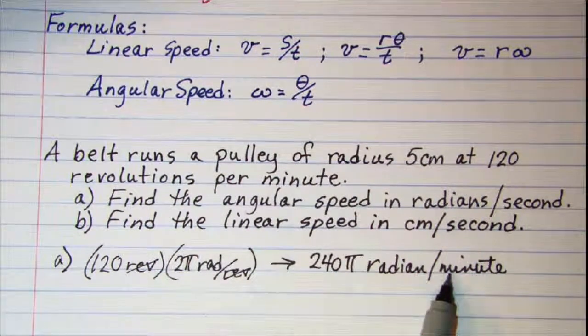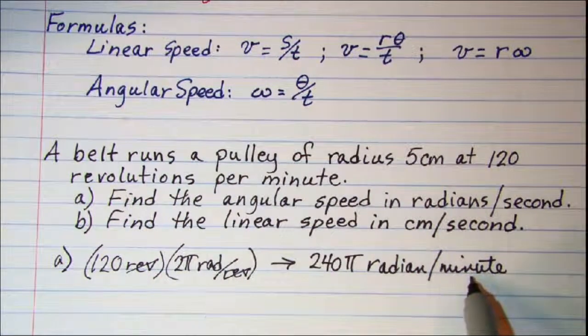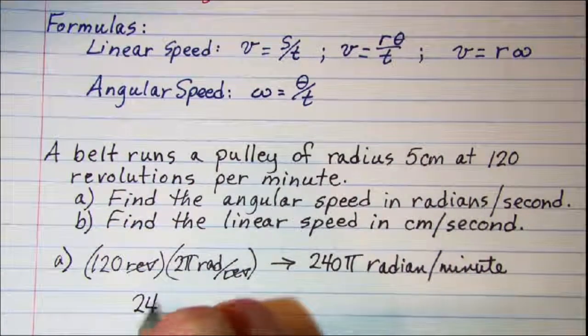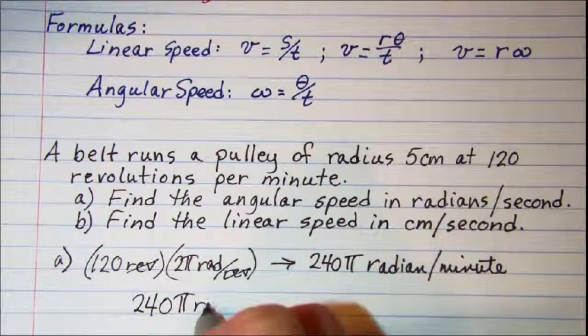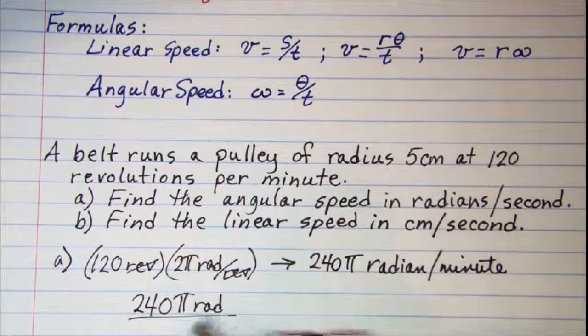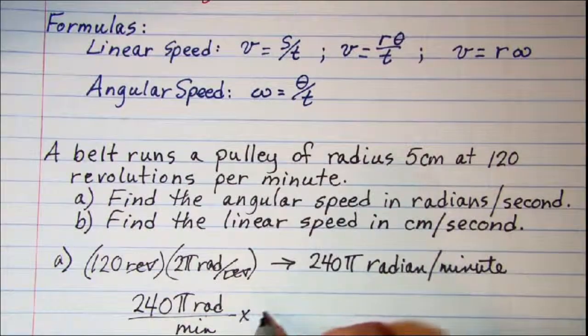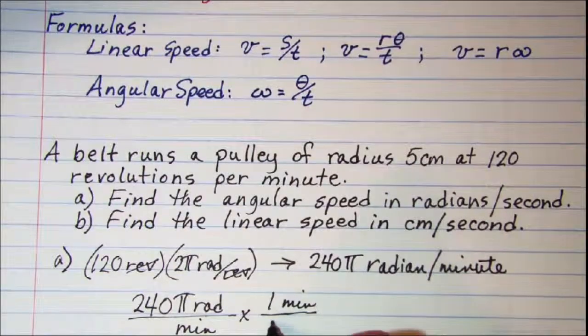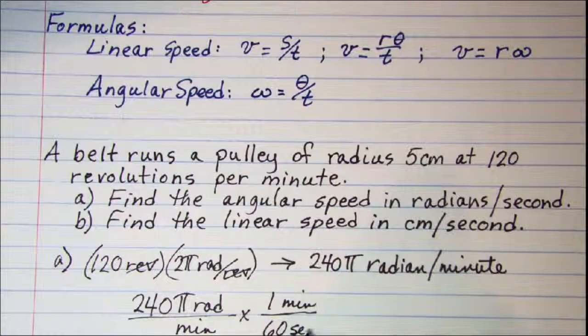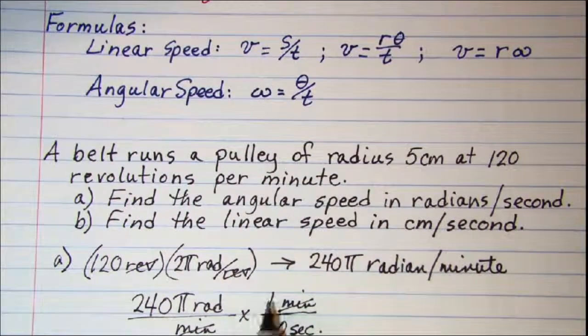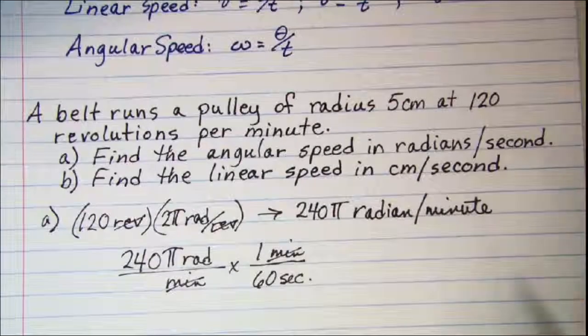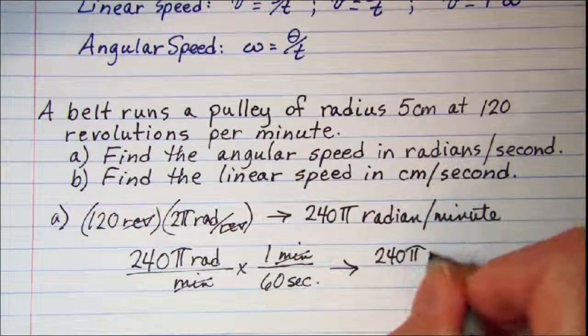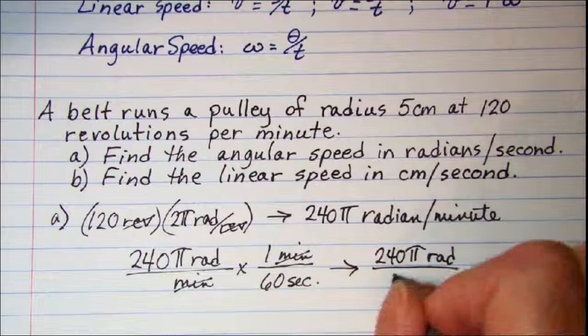Then we know that there are 60 seconds in one minute. So I can take this 240π radians per minute and we're actually using unit multipliers. One minute is the same as 60 seconds and our units cancel off. So we have 240π radians per second.